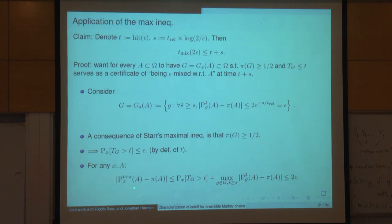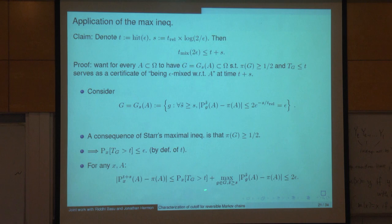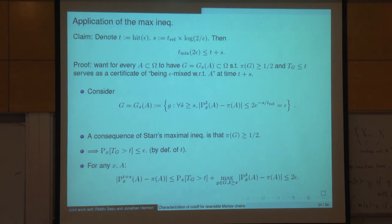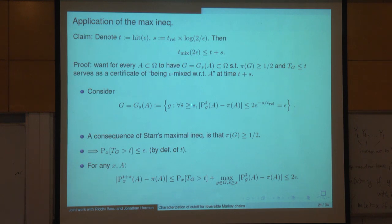For any starting point x and any set A, I check the distance in total variation at time T + s. I separate this difference into two pieces. One piece comes from the event that T_G was bigger than T — this probability is less than ε by the definition of hit(ε). In the remaining part of the probability space, we have hit G by time T, but sometime before T. From the hitting time until T + s, the remaining time is some number s̃ ≥ s.